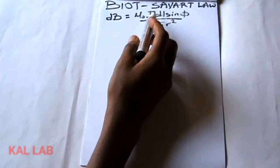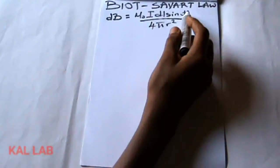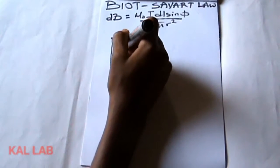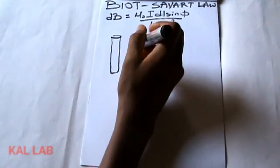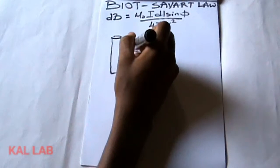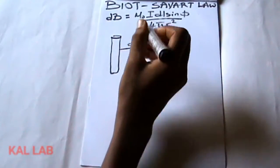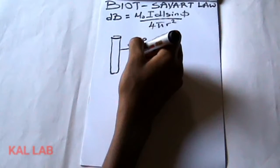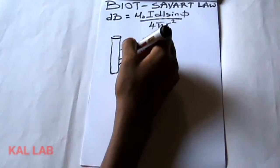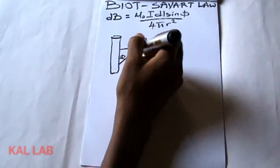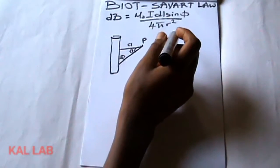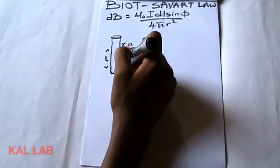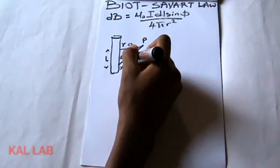Here I is the current passing through the wire in a little length dl, and sinφ is the angle. The angle φ is the angle between the line drawn from the point P to this conductor. This is our φ, and this is our θ. Here is our increase in length dl, our point x, and we name the distance r.